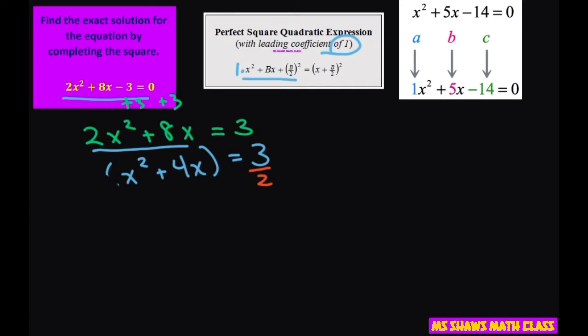Now when you have it like that, we can complete the square by writing this as x squared plus 4x plus, and what we're going to do is put this equation, this b divided by 2 squared. Our b happens to be 4.